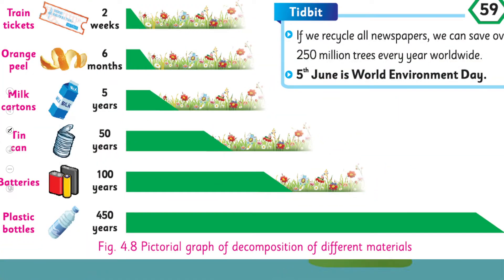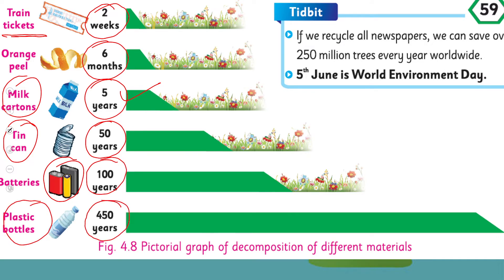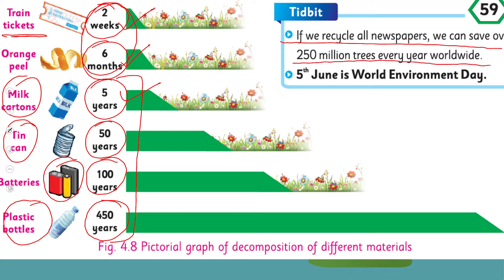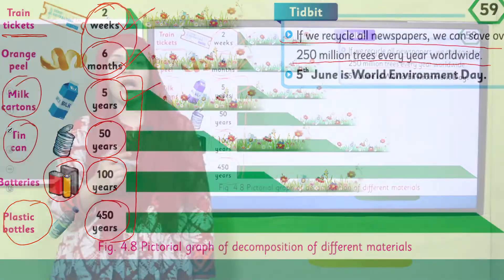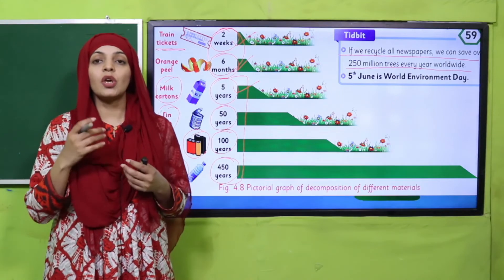Here you can see a degradation timeline: train tickets take two weeks to degrade; orange peel takes six months; milk carton takes five years; tin can takes 50 years; batteries take 100 years; plastic bottle takes 450 years. Train tickets are biodegradable because they are made of paper, and orange peel is biodegradable. If we recycle all newspapers, we can save up to 250 million trees every year worldwide, because paper is made from trees.